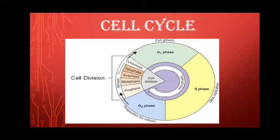First, we will study in detail about the interphase. The two daughter cells produced from a mother cell are relatively small with a full-sized nucleus but relatively little cytoplasm. These cells are said to be in interphase. During this phase, they prepare for the next cell division and grow to the same size as their mother cell. The interphase itself has three phases.